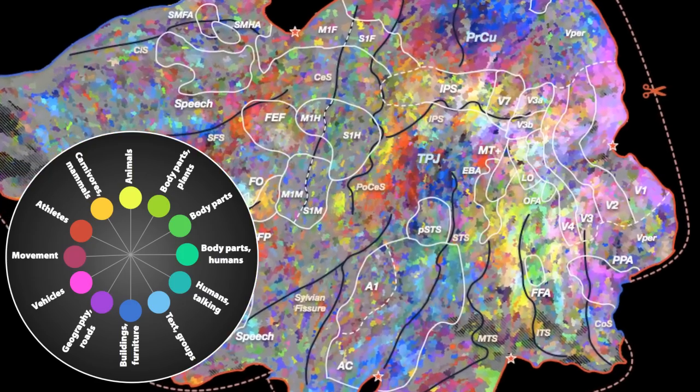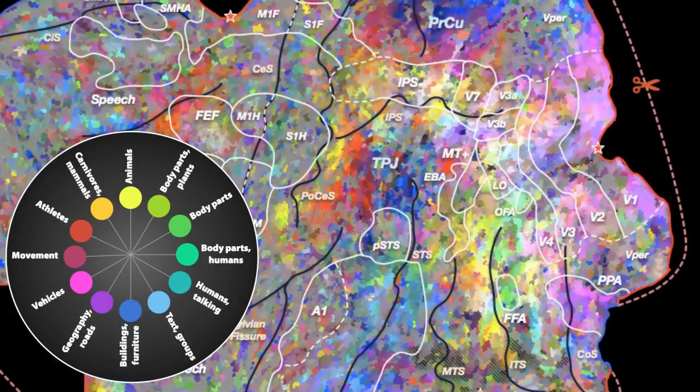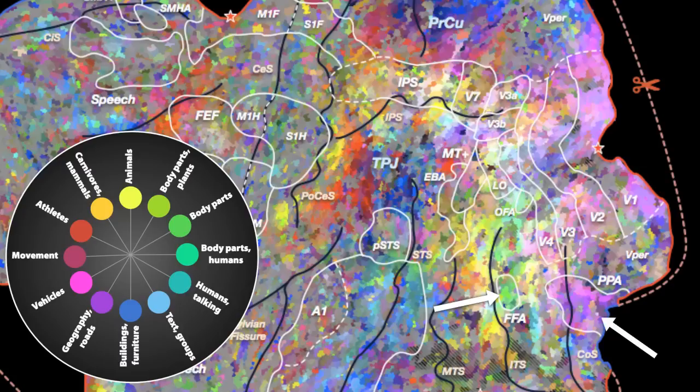What we see is a really complex pattern of semantic selectivity throughout higher visual cortex. These patterns are consistent with the well-known semantically selective brain areas, like the fusiform face area and parahippocampal place area, but we also see semantic selectivity in much of the surrounding cortex.